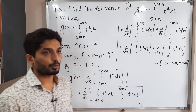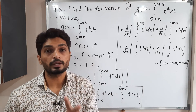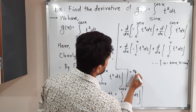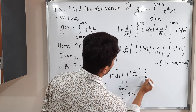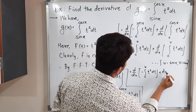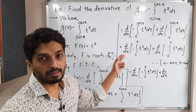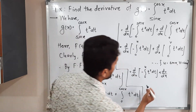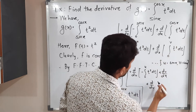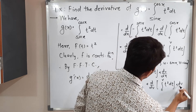Again we have a problem: we are taking the derivative with respect to x, but the upper limit is u. Both variables should be the same, so I am going to use the chain rule. By the chain rule: the derivative with respect to u of the integral from zero to u of t squared dt, multiplied by du/dx. Similarly, by chain rule: d by dv of the integral from zero to v of t squared dt, multiplied by dv/dx.